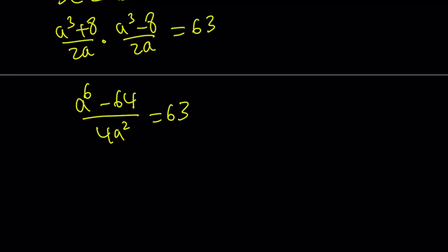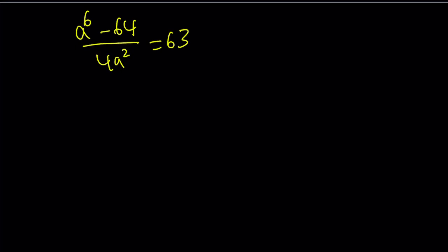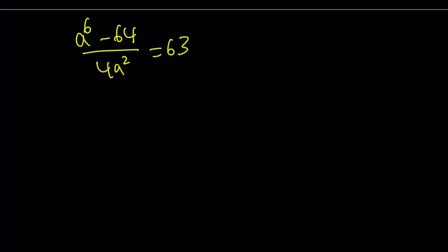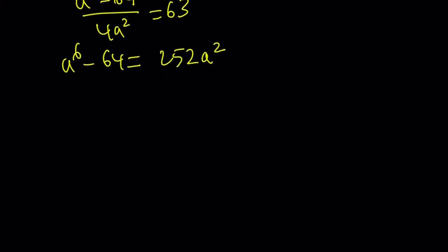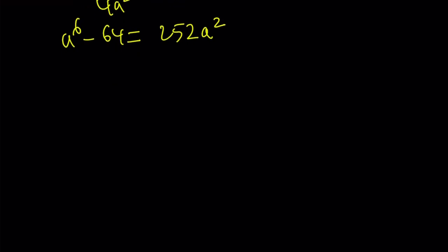Now from here we're going to get a hexic equation but we're going to turn it into a cubic. So let's go ahead and distribute. A to the 6th minus 64 is equal to 252a squared. Which is 63 times 4 by the way. And we can put everything on the same side. A to the 6th minus 252a squared minus 64 is equal to 0.